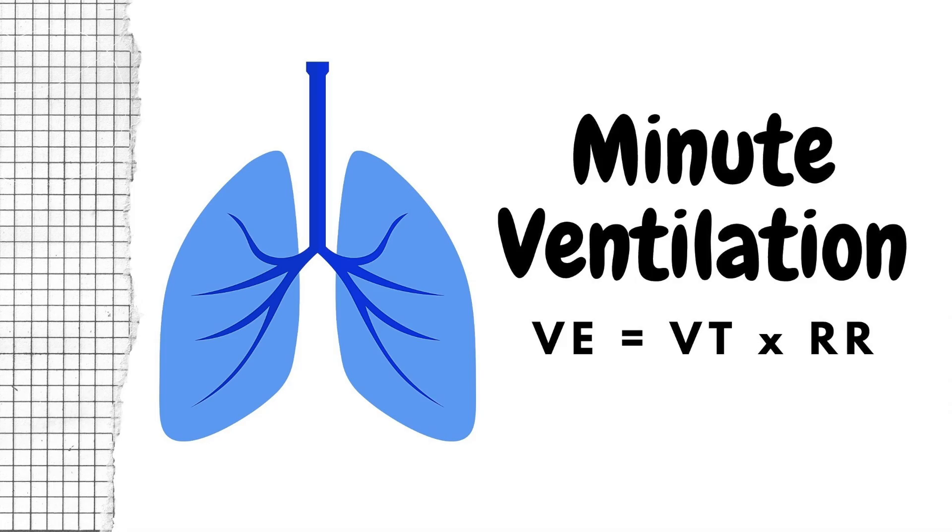How do we measure ventilation? Ventilation is measured as minute ventilation in mechanically ventilated patients, and this is calculated by multiplying the tidal volume times the respiratory rate. If you want to change your patient's carbon dioxide level to better ventilate them, you'll do this by either modifying the rate or the tidal volume.